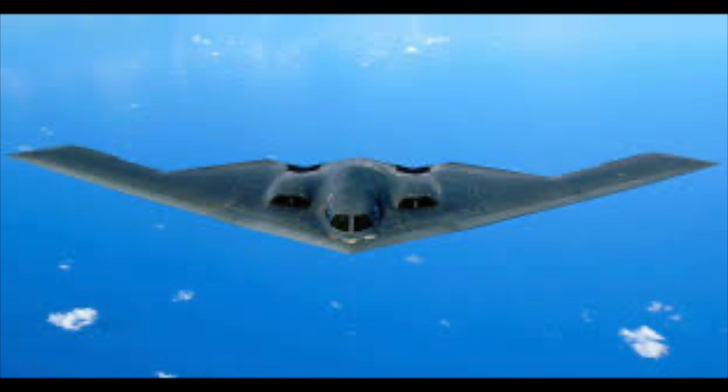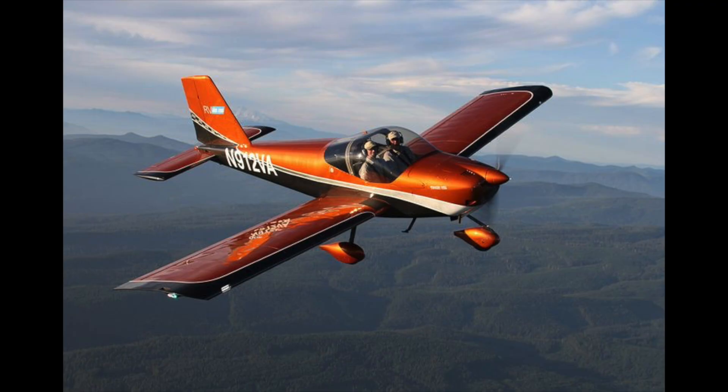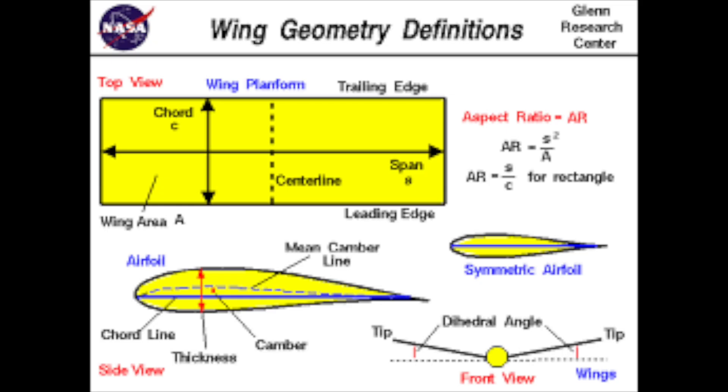And sometimes, like with this B-2 bomber, the wing is the entire plane. So what can we say about the design of the Van's RV-12 wing? Why did the designers choose the shape and size they did? Let's look in detail at this wing compared to designs chosen for other planes in a similar class.